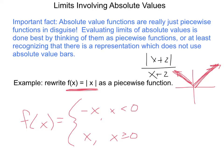I want you to actually understand what's happening here. If the thing inside of the absolute value is positive — make sure you've got your brain turned on — if the thing inside of the absolute value is positive, then what's the absolute value bar really doing? It's doing nothing. Which means I don't need it. So if the thing inside the absolute value bar is positive, you can just get rid of the absolute value bars.